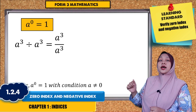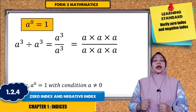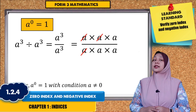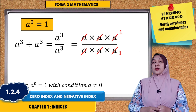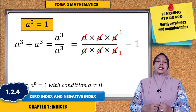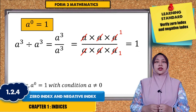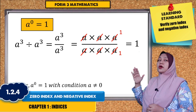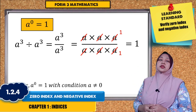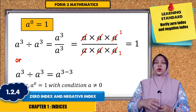This is how we solve the question: A times A times A divided by A times A times A. We cross out the terms that are the same — A, A, A, A — and we get 1 over 1. So 1 over 1 equals 1.